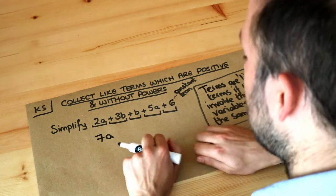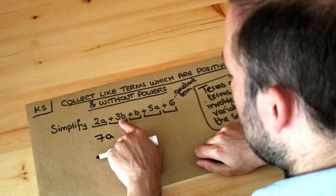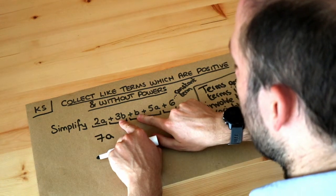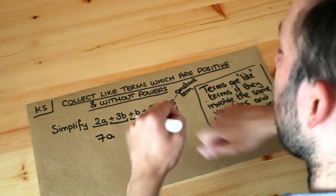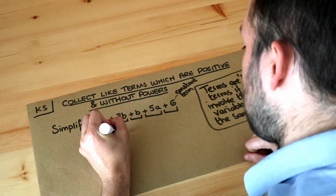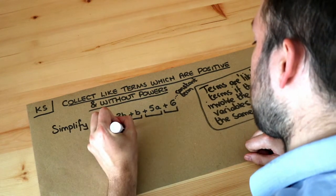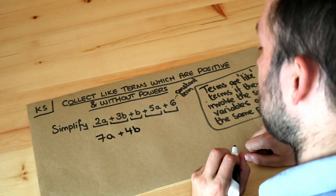What about the b's? We've got three lots of b and we're adding another lot of b, so in total we've got four lots of b. Make sure you put the plus on the front — positive 4b.